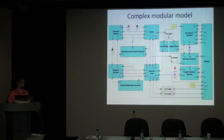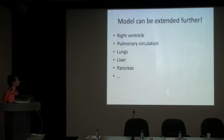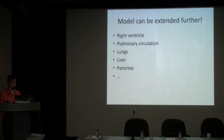So we have created our next version of the model. Of course, it may be extended further — we can add right heart, pulmonary circulation, lungs, liver, pancreas, and so on. Of course, the first thing we need to do before that is to make sure that our model works correctly and produces the right results. Now my colleague Barisim Salop will tell you about complex model validation. Thank you.